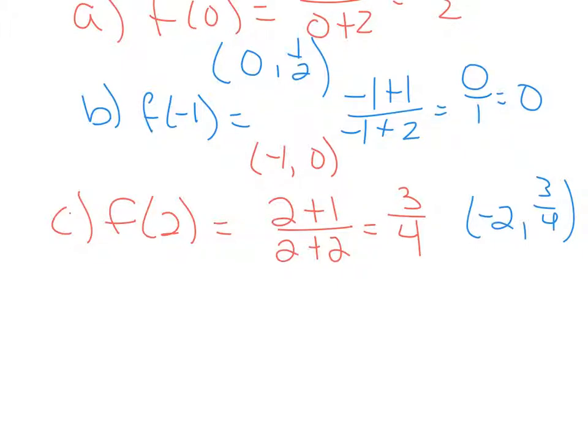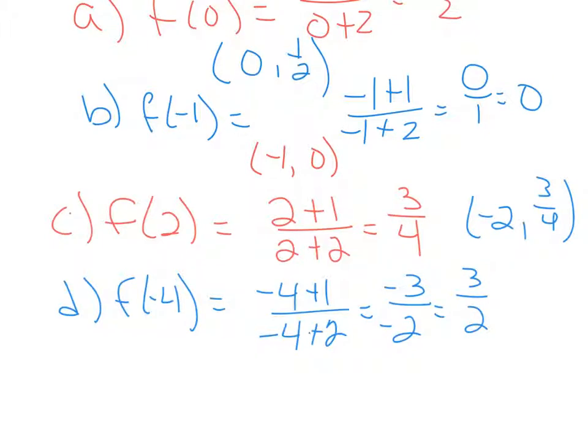Letter d says find f(-4). So (-4)+1 over (-4)+2 equals -3 over -2, which simplifies to make positive 3/2. Negative divided by negative makes positive, so you need to make sure that you are always simplifying your fractions. As an ordered pair, that means when x is -4, y will be 3/2.